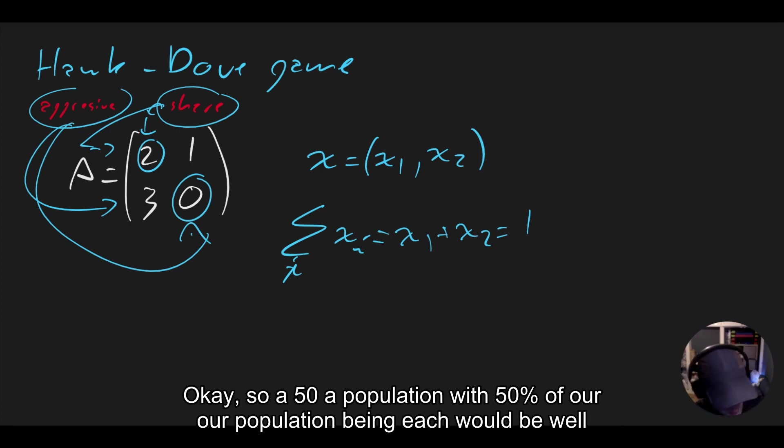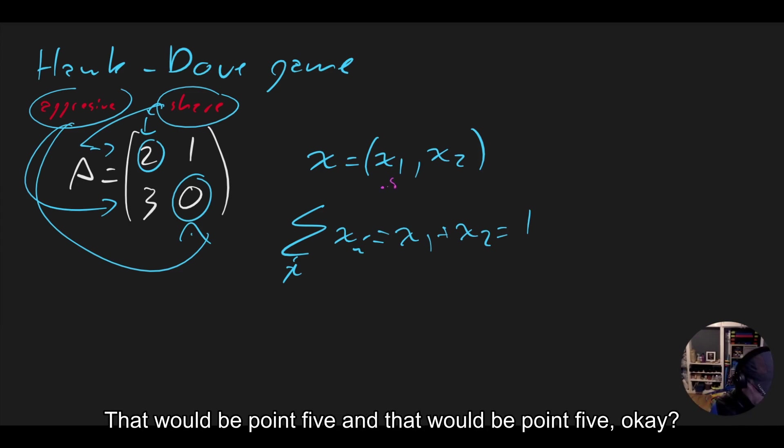So a population with 50% of our population being each would be, well, that would be 0.5 and that would be 0.5.